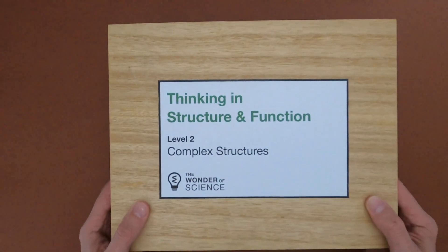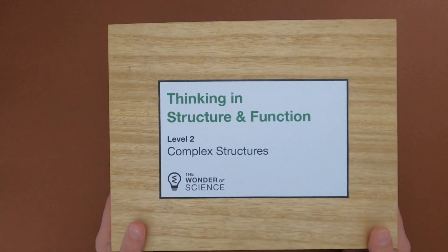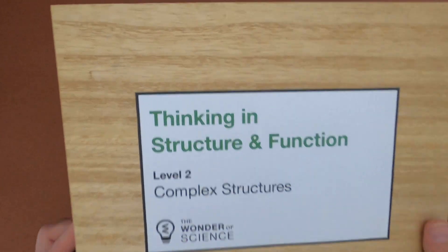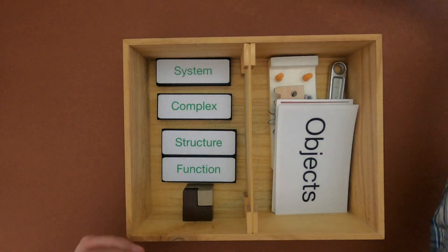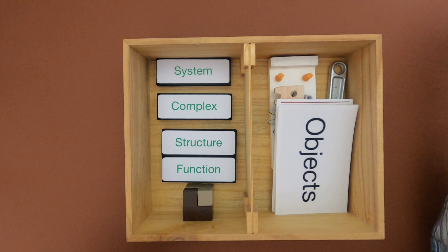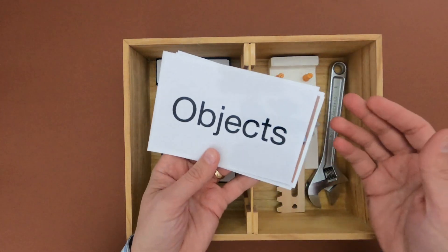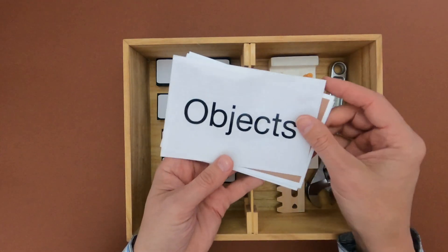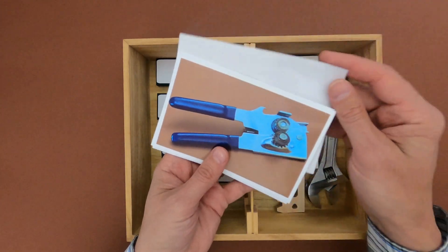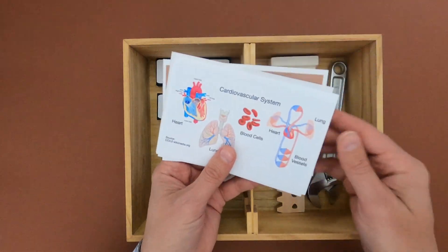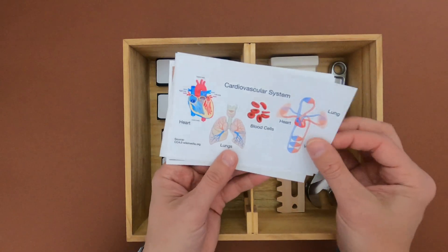Hi, it's Mr. Andersen and this is Thinking in Structure and Function, Level 2: Complex Structures. We're going to be doing some modeling. After watching this video you should be able to identify interacting structures in complex structures like a can opener or in a cardiovascular system.